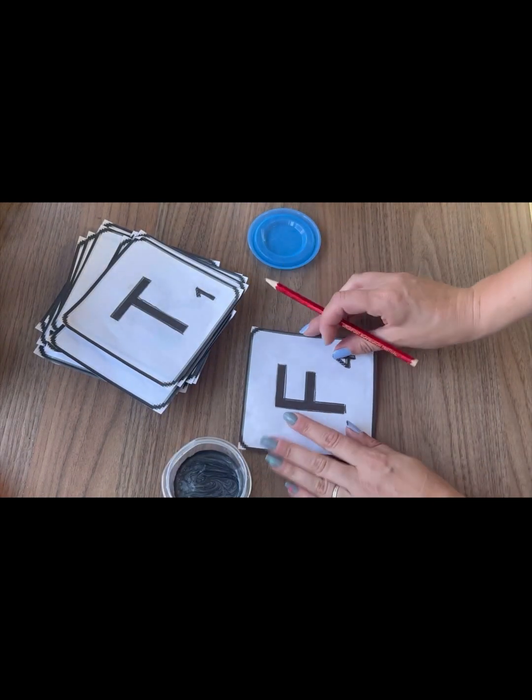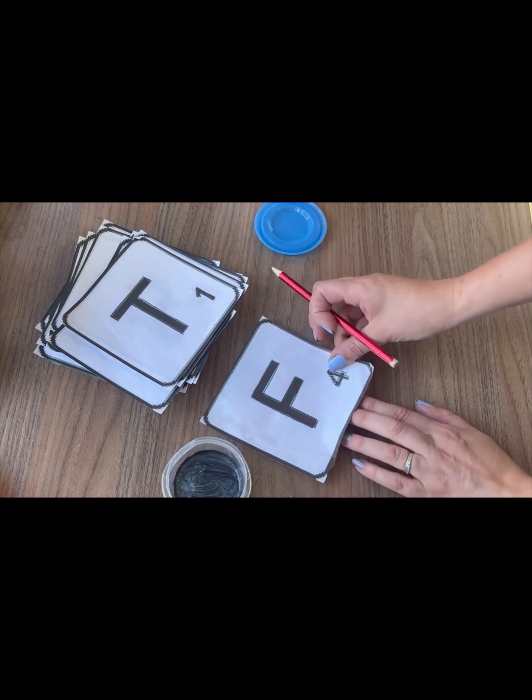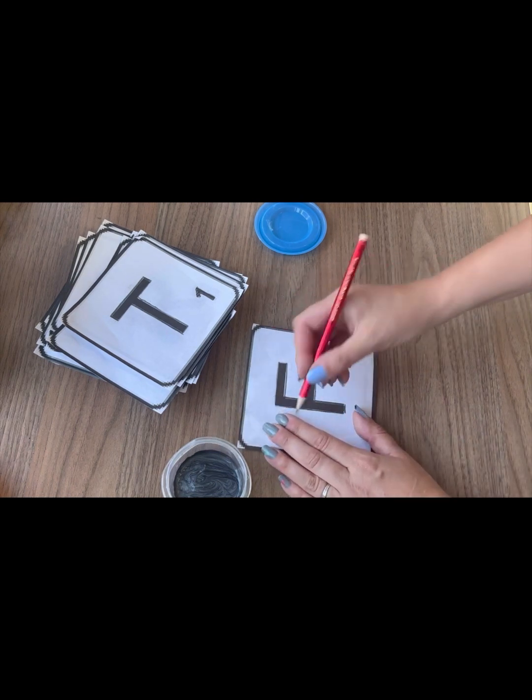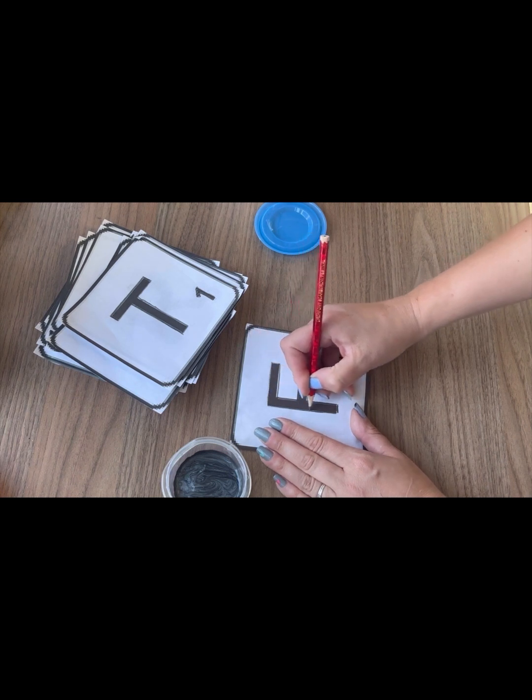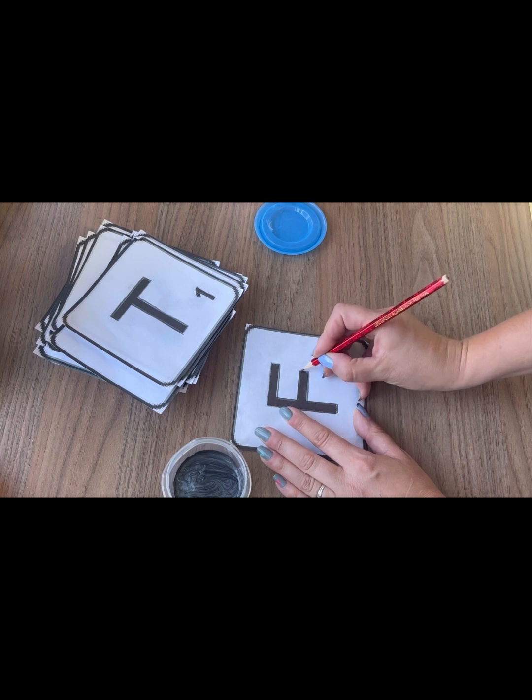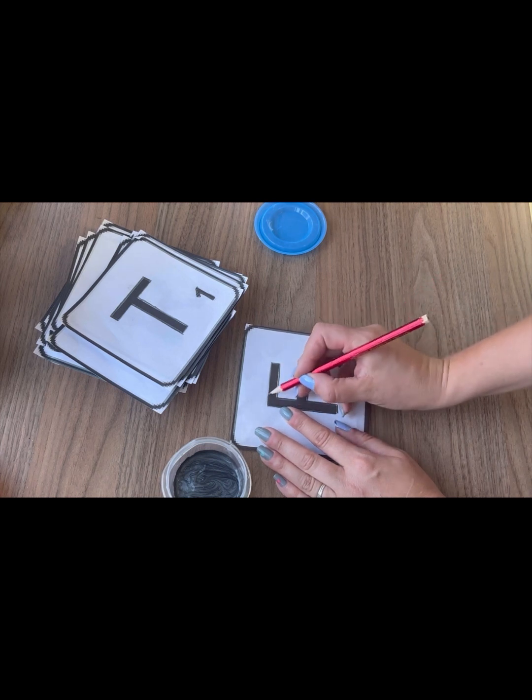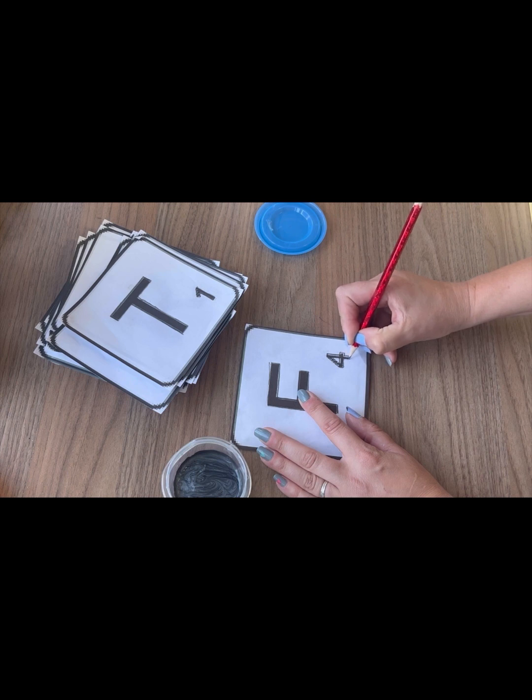Over the letters and over where the numbers go. So flip that over, line it up where you want, near enough in the middle kind of. I think that's about right. Then you just trace over the edge where the letter goes. So down, across, up. What that will do is it will transfer the pencil that you put on the other side that you shaded onto your tile. Trace it all the way around.